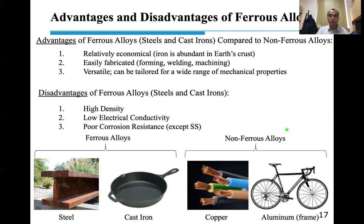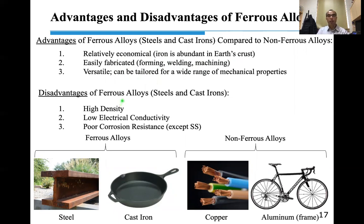For ferrous alloys, advantages include: iron is abundant in the earth so it's cheap and economical; it's easy to fabricate through welding and machining; and it's versatile — adding different alloy elements changes mechanical properties. Disadvantages include: high density (iron is 7.9 g/cm³, meaning it's heavy), relatively poor corrosion resistance, and limited electrical conductivity.